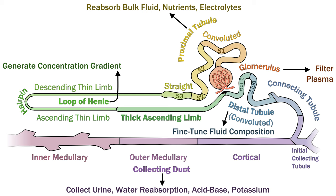Each segment can be further divided. The proximal tubule before the thin descending limb is divided into segments S1, S2, and S3, with part of S2 and S3 forming the proximal straight tubule. Then there is a descending thin limb, which undergoes a hairpin turn, ascends, and becomes the thick ascending limb. The area marked in black is the macula densa, which forms part of the juxtaglomerular apparatus. The distal convoluted tubule is divided into early and late portions; there is also the connecting tubule. The collecting ducts are divided according to their location: cortical, outer medullary, and inner medullary.